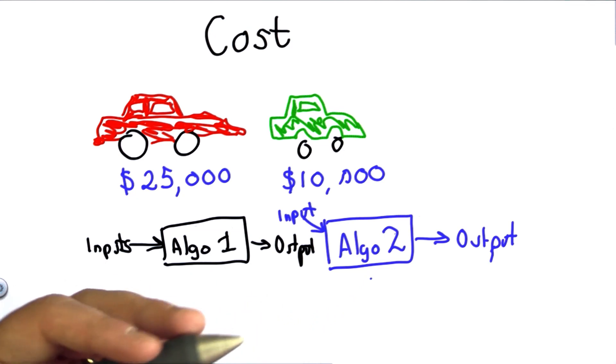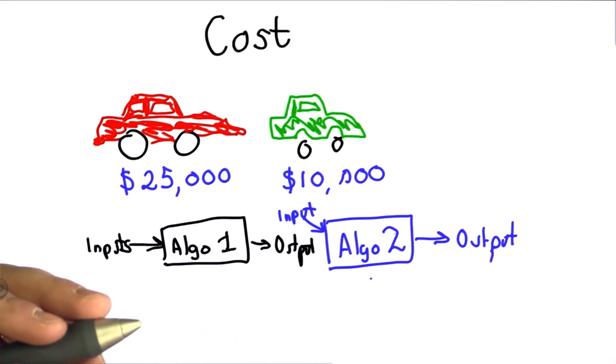So what we need to understand is how the cost of executing the algorithm depends on the input. We don't want to do that for every specific input, right? If we had to do that for every input, well, we might as well just run it on the input and see what it costs. What we want to do is be able to predict this without actually having to run it on every input. Normally, there isn't that much that matters about the specific input.